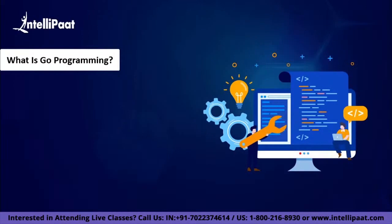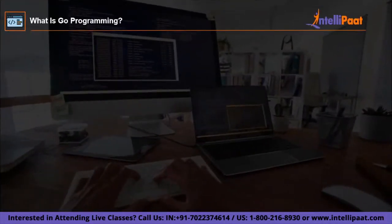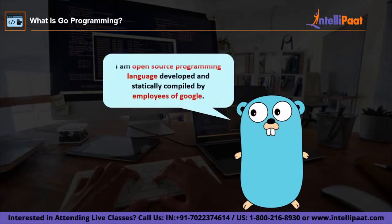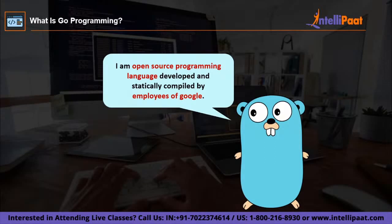Let's get started with the first topic: what is Go programming? Go is an open source programming language that is statically typed and compiled, developed by employees of Google. The story goes that Google engineers designed Go while waiting for other programs to compile. Their frustration at their toolset forced them to rethink system programming from the ground up, creating a lean, mean, compiled solution that allows massive multithreading, concurrency and performance under pressure.